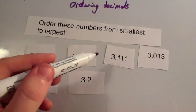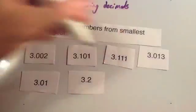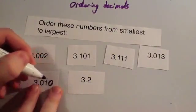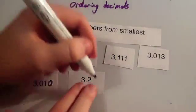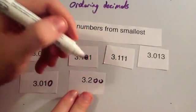This one has got three. This one's got three. This one's got three. This one's got two. So we're going to put a zero on the end of this one to make it the same length as the others. This one's only got one decimal place, so we're going to put two zeros on the end of it.